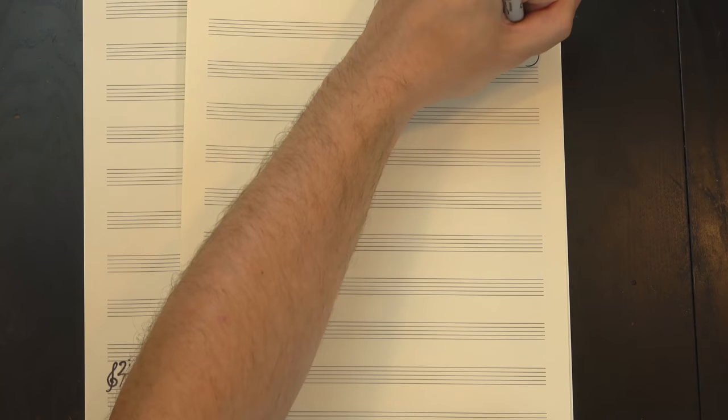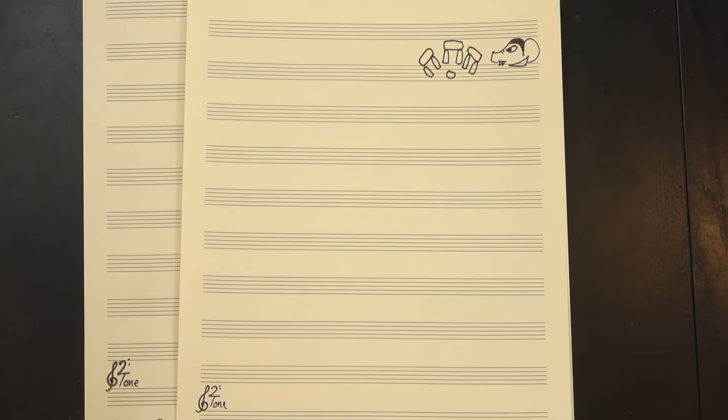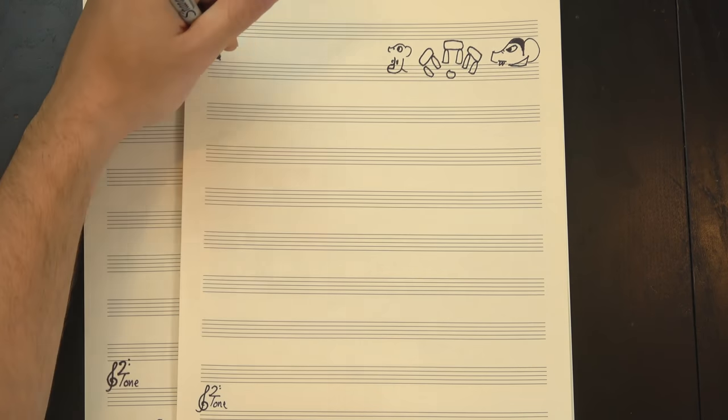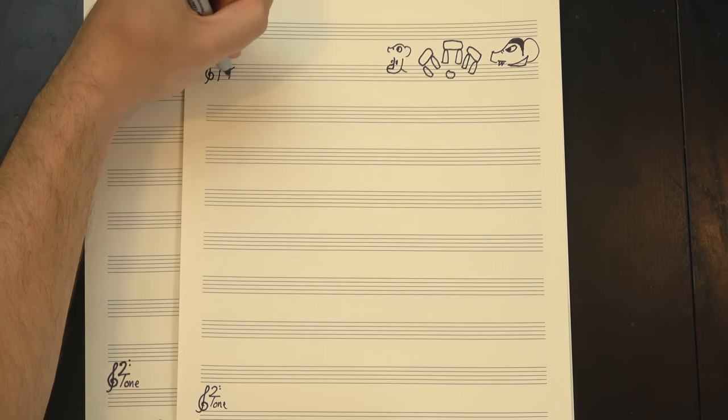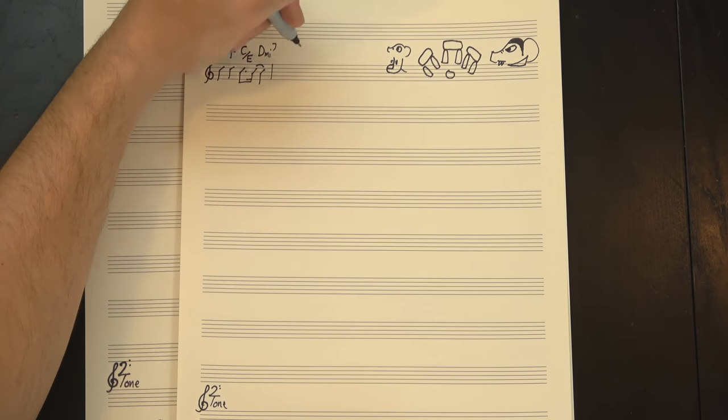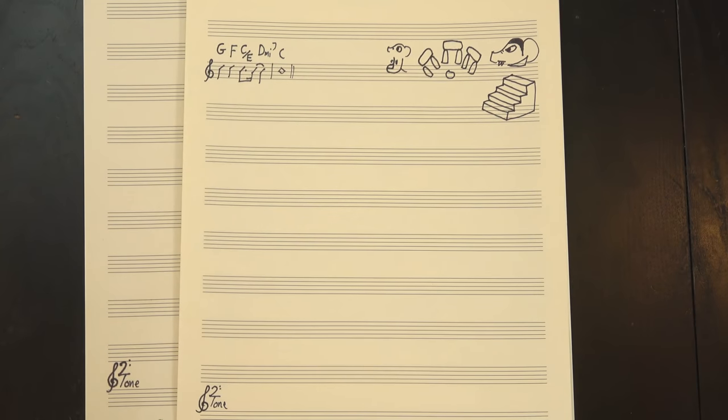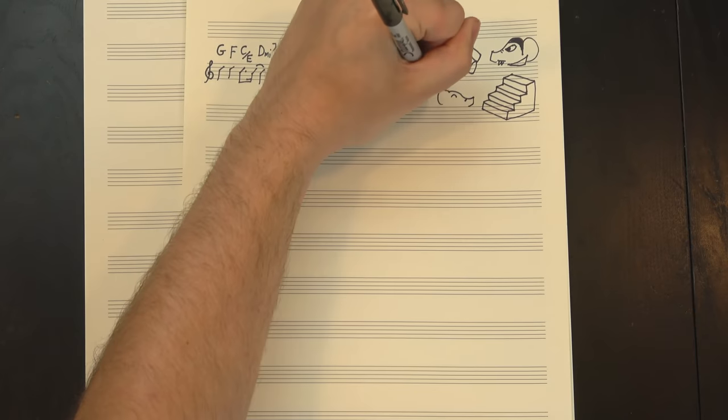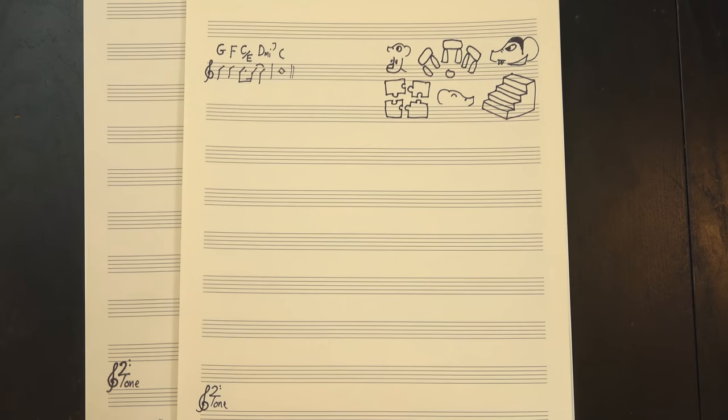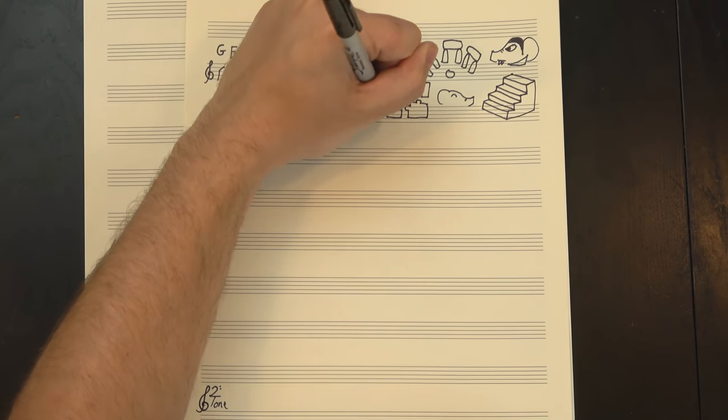The last stanza returns to the C-F vamp, putting us back on familiar ground. At the very end, though, instead of sitting on F, it does this little turnaround, walking down the scale to return back to C at the start of the next verse. It's a nice effect, creating a sense of everything falling into place, which is fitting because this is also where the orchestration really comes together.